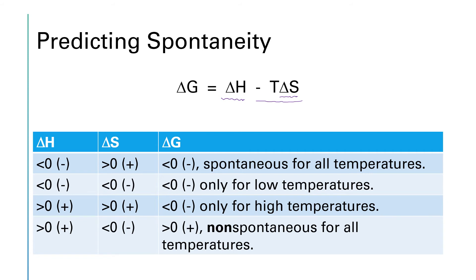If you followed that mathematical reasoning, you don't need to memorize the table — you can just work through it on the test. But if it didn't make sense, you should probably memorize the table showing what the sign of delta G will be based on the signs of delta H and delta S.